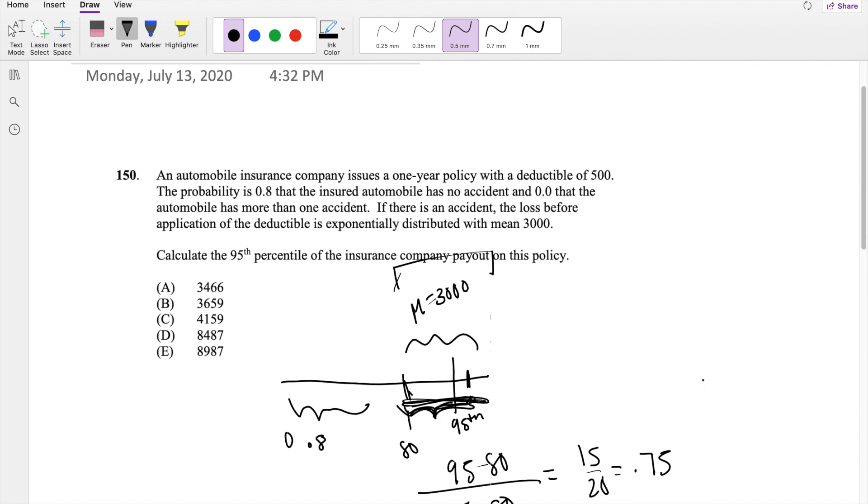But don't stop there because there is a deductible of 500. So the actual payout is going to be 4158 minus 500, which is about equal to 3658.88, which is our answer B.